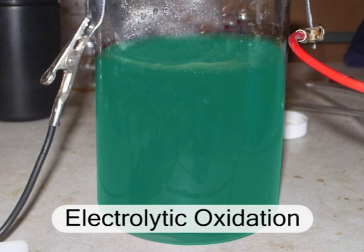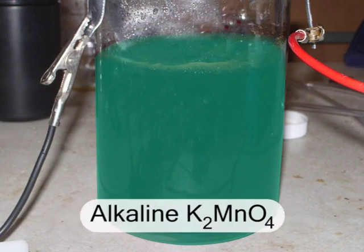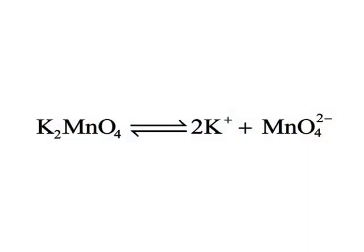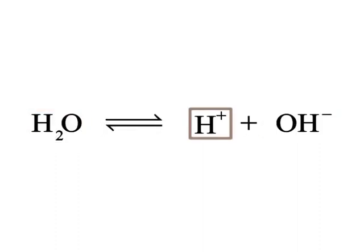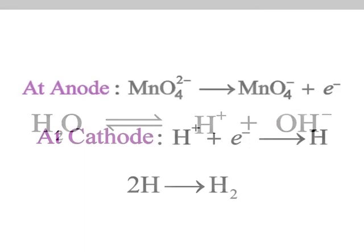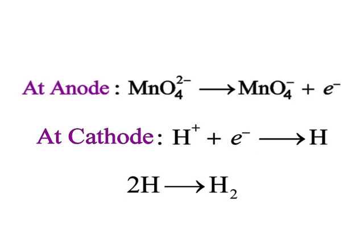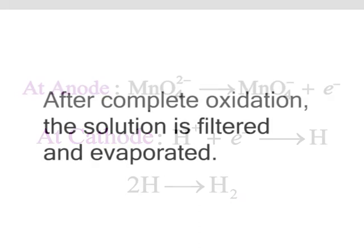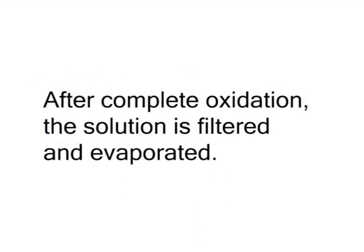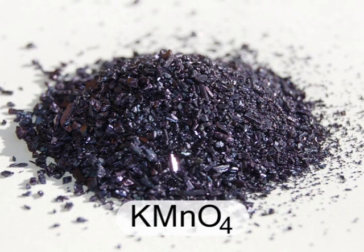In electrolytic oxidation, the alkaline manganate solution is electrolyzed between iron electrodes separated by a diaphragm. Potassium manganate dissociates to form potassium ions and manganate ions. At the anode, manganate ions change to permanganate ions by oxidation and electrons are released. At the cathode, hydrogen ions take electrons and are reduced, releasing hydrogen gas. After complete oxidation, the solution is filtered and evaporated to yield crystals of potassium permanganate.